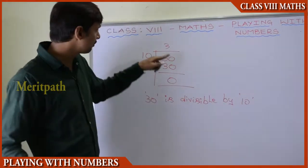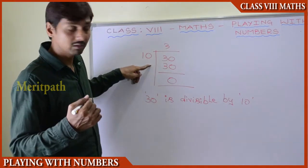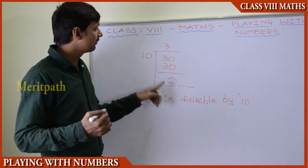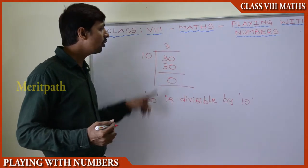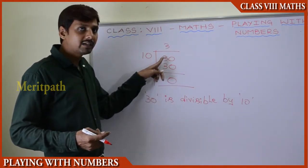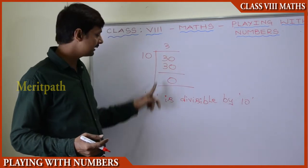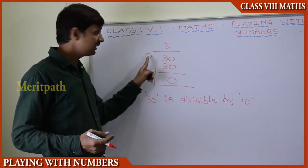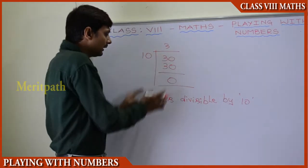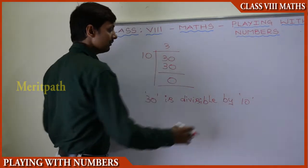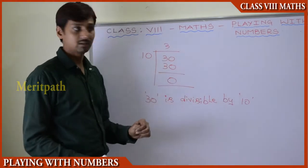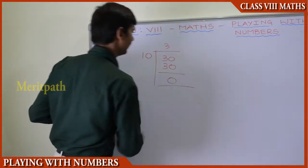We have taken a number and divided it with some other number. Here we have taken a dividend of 30, so the divisor is 10. We got the remainder 0, so that is the reason we call 30 is divisible by 10. Let us take some other example here.